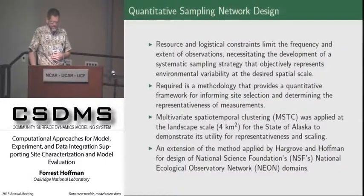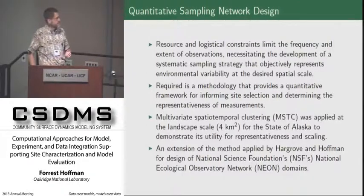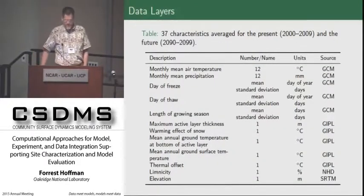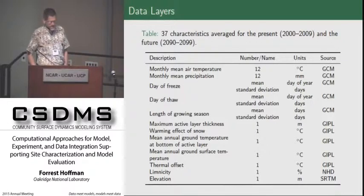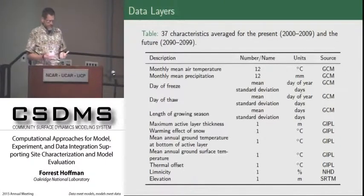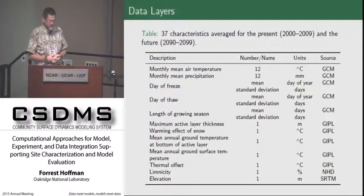We applied a multivariate spatial-temporal clustering algorithm at the landscape scale for about four square kilometer resolution across the state of Alaska to demonstrate the utility of this methodology for representativeness and scaling. This is really an extension of the method that I applied with Bill Hargrove, a colleague of mine, to establish the NEON domains across the U.S. — and with NEON, that's actually one thing that has not changed in that program: where those domains live. What we used here were 37 characteristics that were averaged for the present and the future, two different decades, using a lot of model data and a few observations assumed not to change over time.